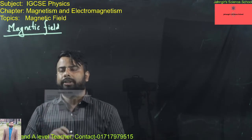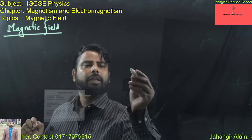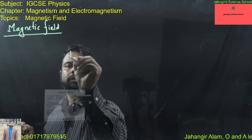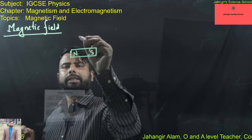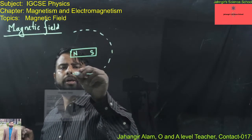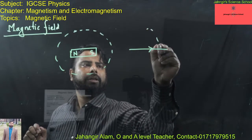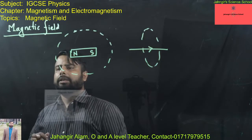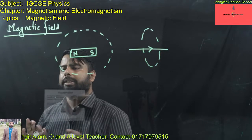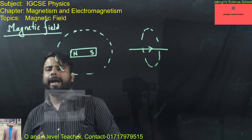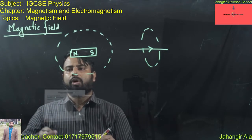If we place a magnet here with a North Pole and a South Pole, there is a space or region around it. Similarly, around a current-carrying wire, there is a region or space where the magnetic force is exerted — this is called the magnetic field. All magnets are surrounded by a magnetic field.